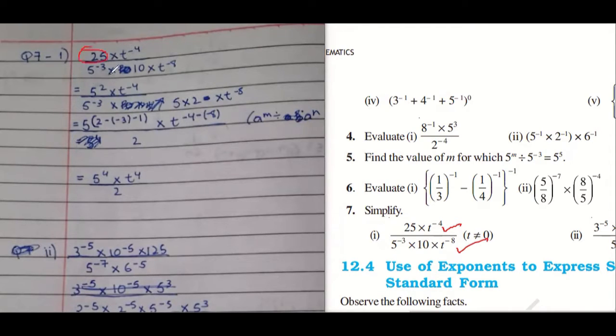So, 25 and 10 were composite numbers and you have done it correctly. 5 power 2 and 10 can be written as 2 into 5. So we can write it as 5 power 1, 2 power 1. Is this thing clear? Yeah, good.